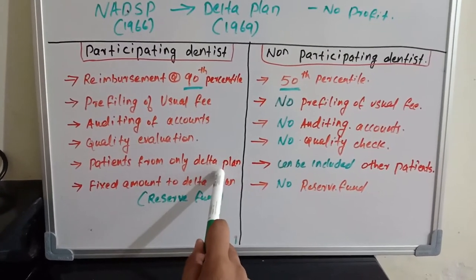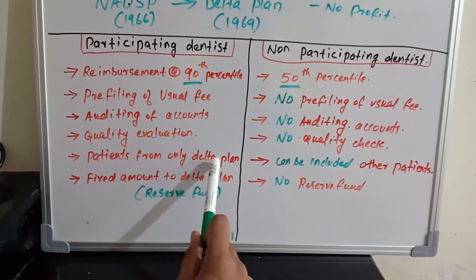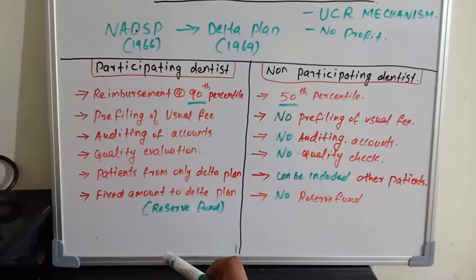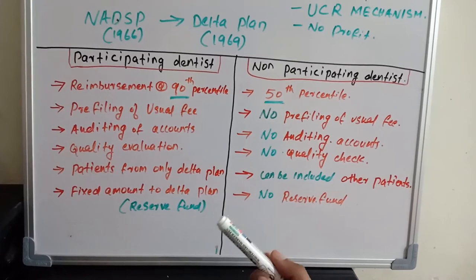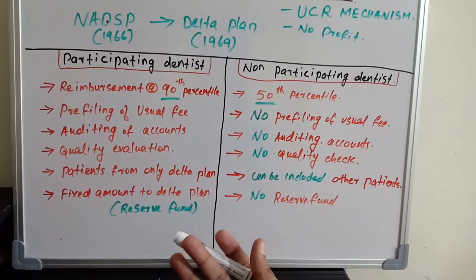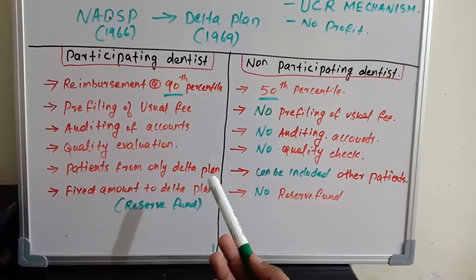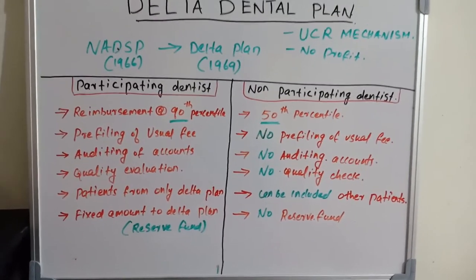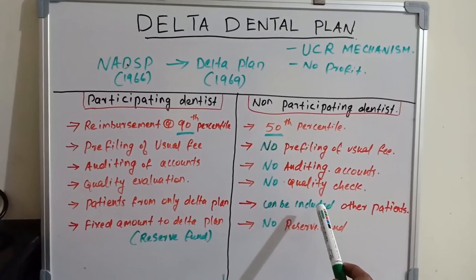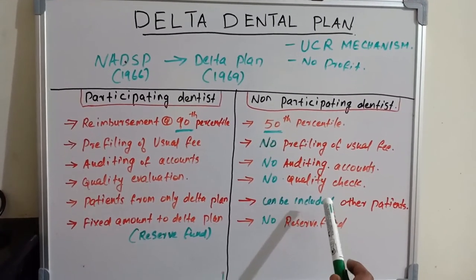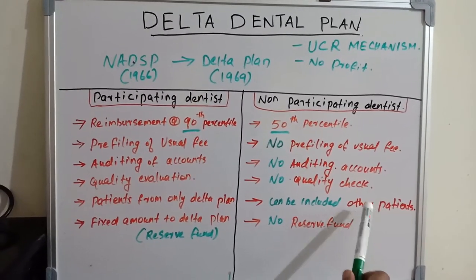The participating dentist can take up patients only from the Delta Dental plan — patients who are registered in the Delta Dental plan. He cannot take up patients from any other plan, such as a Cavitation plan or Blue Cross Blue Shield plans. The non-participating dentist, however, can give treatment to any patients from any scheme.